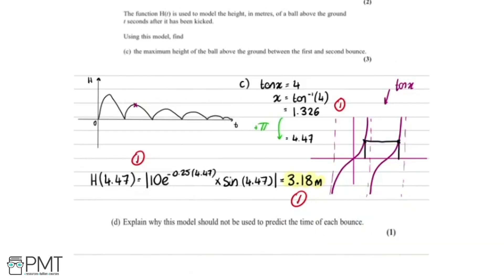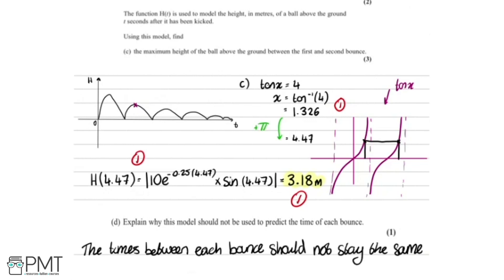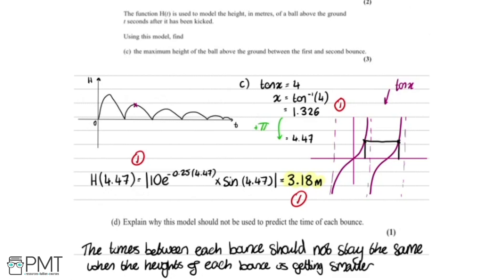Lastly, part d asks: explain why this model should not be used to predict the time of each bounce. The reason is that the times between each bounce should not stay the same when the height of each bounce is getting smaller. In the model the times between each bounce are constant, but in reality the time between bounces gets shorter and shorter as the ball bounces lower. We get one mark for this statement.